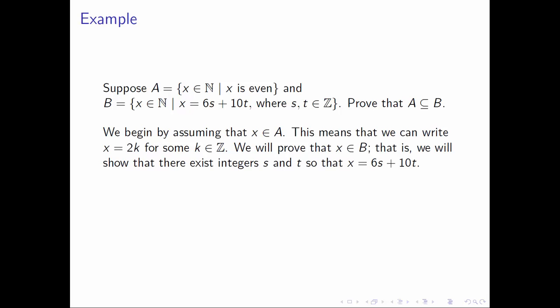Like all direct proofs, we begin by stating our assumptions, and our assumption is that X is an arbitrary element of the set A. What this means is that property P, X is even, is true of the element X. So we can write X as 2K for some K in the integers. Recall, that's what it means for an element to be even. We can write it as 2 times an integer.